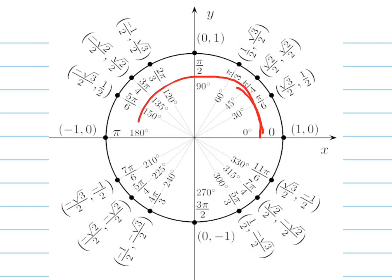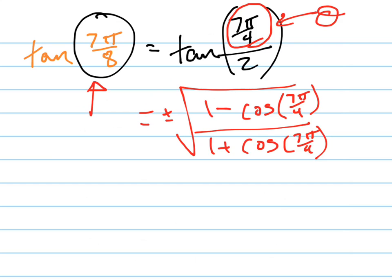7π/8 is in this second quadrant right here. And what's the tangent in the second quadrant? It's negative. So I know this is going to be negative. That's how you figure out if it's positive or negative.